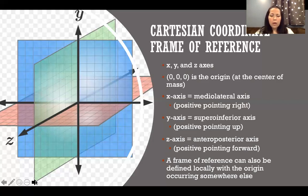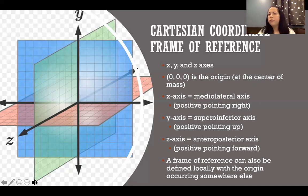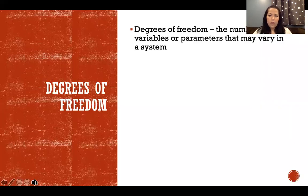A frame of reference can also be defined locally, with the origin placed wherever makes sense for what we're studying. For example, if we're analyzing just the glenohumeral joint, we could define the origin as the center of that joint. It's all relative — we place our frame of reference wherever is appropriate for the system being analyzed.